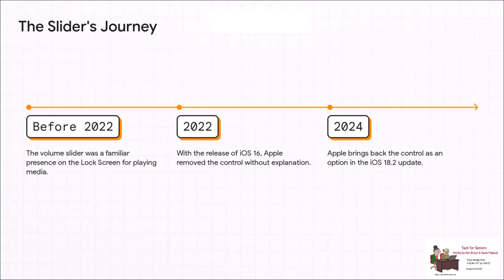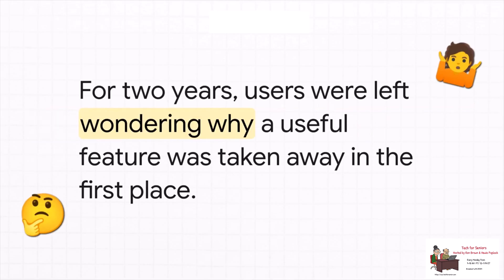Let's walk through the timeline. Before 2022, everything was normal — the slider was just a standard part of the media player. Then iOS 16 dropped, and it was just gone. MacRumors described it as being unceremoniously nixed. For two whole years, nothing — until now. With iOS 18.2, it's finally been reinstated. During that two-year gap, people were genuinely confused: why would you take away such a simple, useful feature with zero explanation? It really became one of those classic 'you don't know what you've got till it's gone' situations.